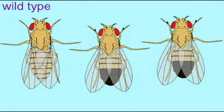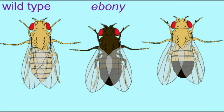While there are a variety of body colors found in different species of fruit flies, the wild-type condition for the species Drosophila melanogaster is a light brown. Various mutations affect body color, some making body color darker to a dark brown or black, such as the mutations ebony and black, and others lighten the body color, such as the mutation yellow.